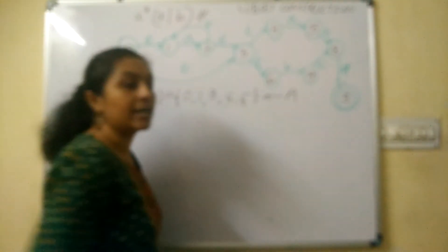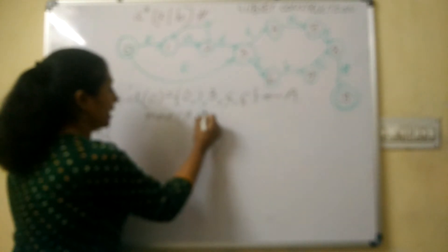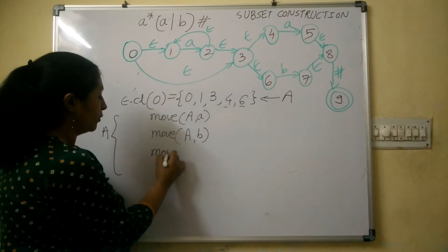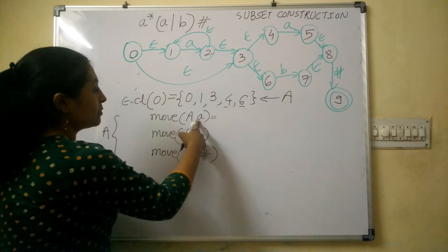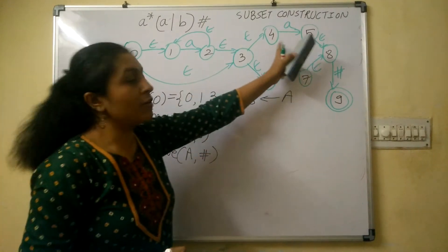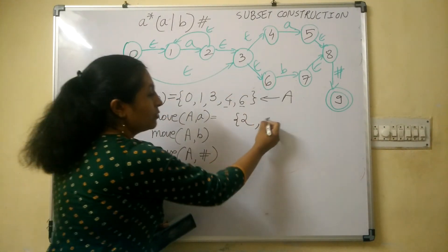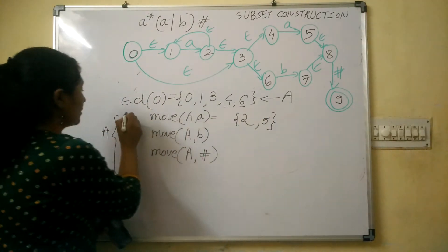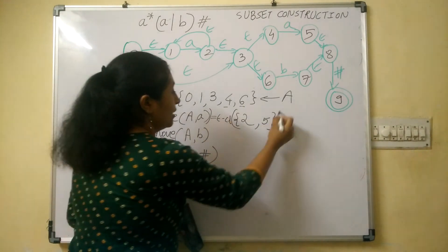Whatever state we get from null closure(0) becomes the starting state of the DFA. So for the DFA, A is the starting state. Now select state A and find move(A, a). From states 0,1,3,4,6: from state 1 we have a transition on 'a' to state 2, and from state 4 we have a transition on 'a' to state 5. So move(A, a) = {2, 5}. Now find null closure({2, 5}).